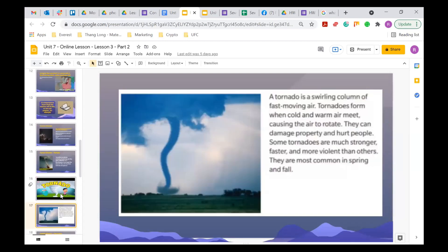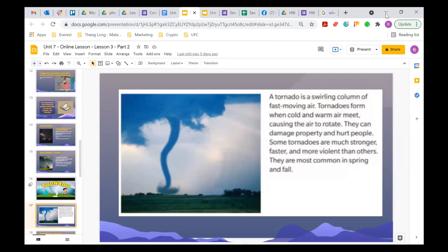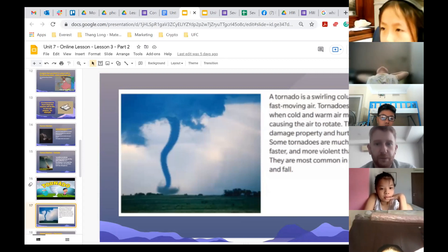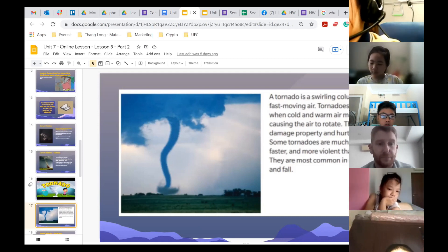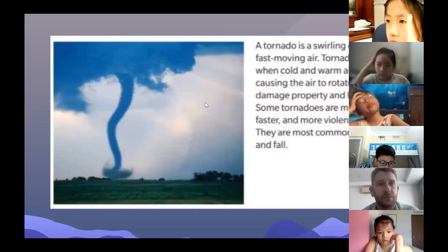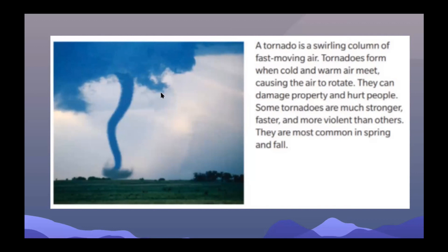Tornadoes are super dangerous — they're formed when cold air meets hot air. They cause lots and lots of destruction. What can tornadoes destroy? A house, trees. A tornado is a stormy column of fast-moving air. Tornadoes form when cold and warm air meet, causing the air to rotate. They can damage property and hurt people.